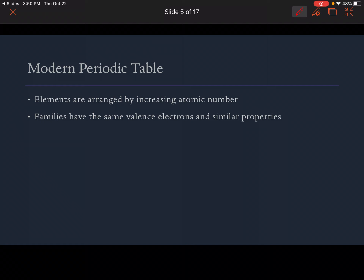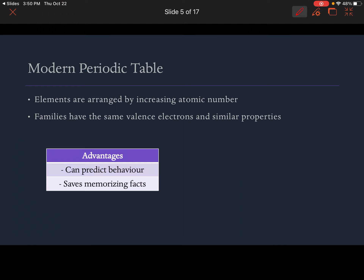Now we have the modern periodic table, which is what we use today. These elements are arranged by increasing atomic number. Families have the same valence electrons — valence being the outermost electrons — and they also have similar properties. The advantage of arranging our periodic table this way is that we can predict the behavior of elements. By looking at the family an element is in, we can make predictions about its behavior, and it saves memorizing facts.